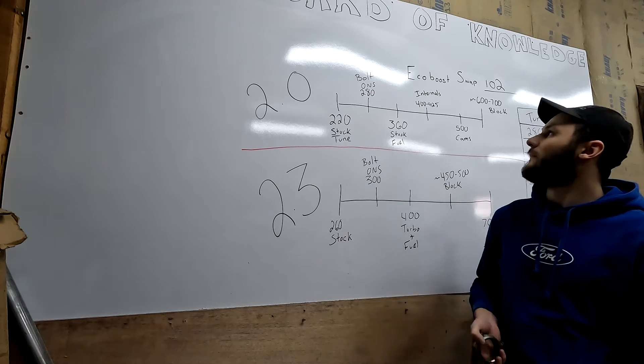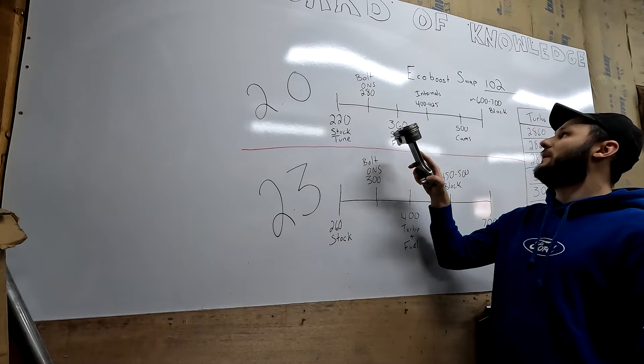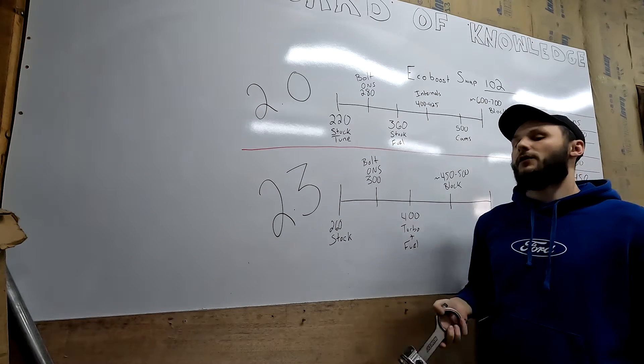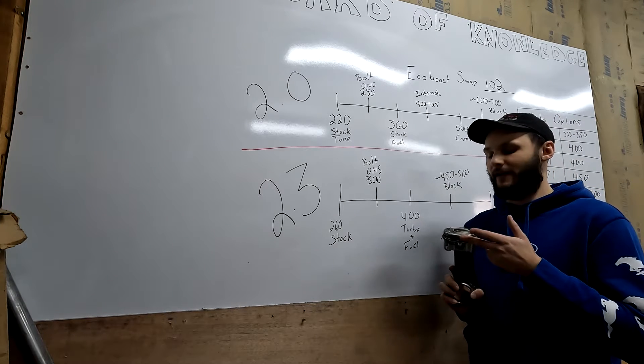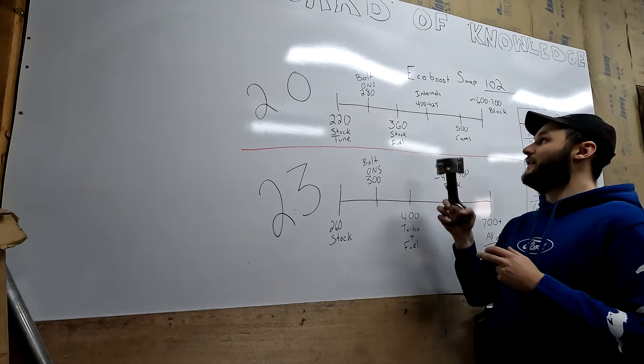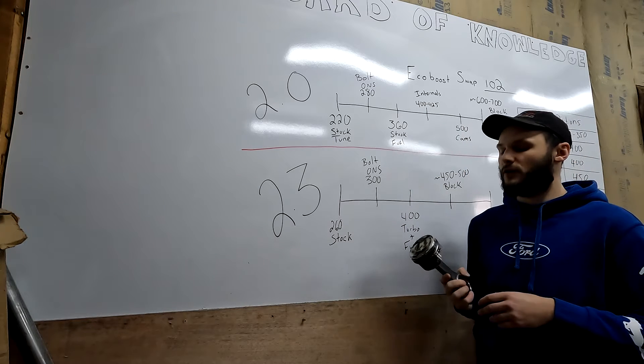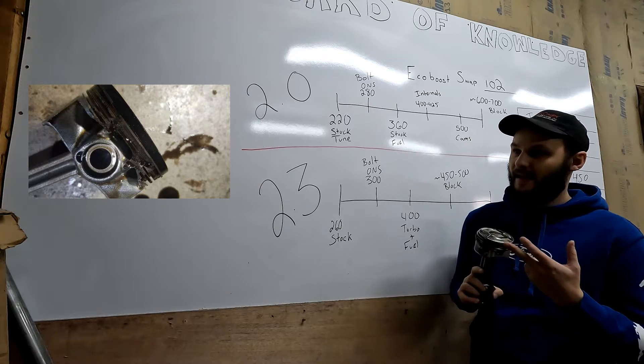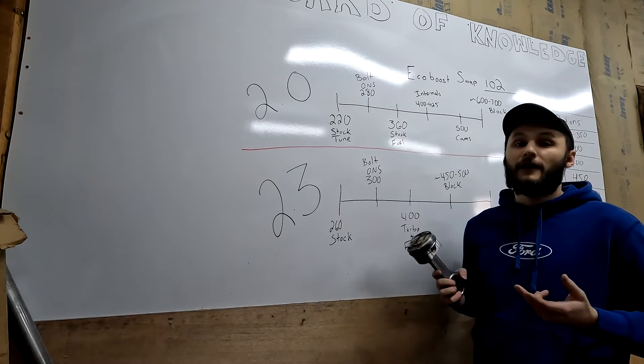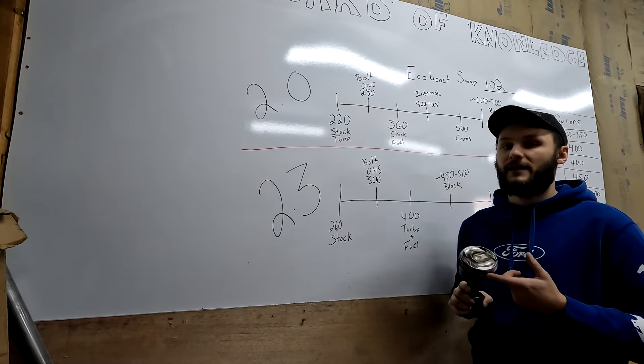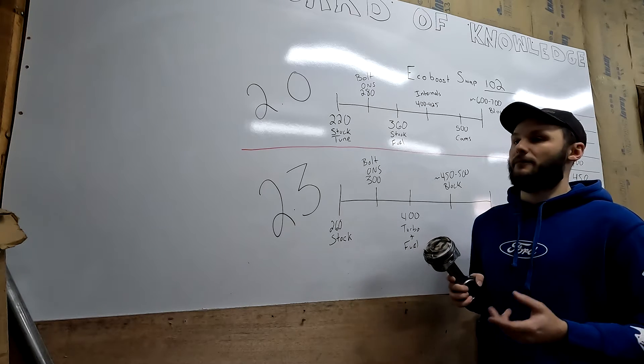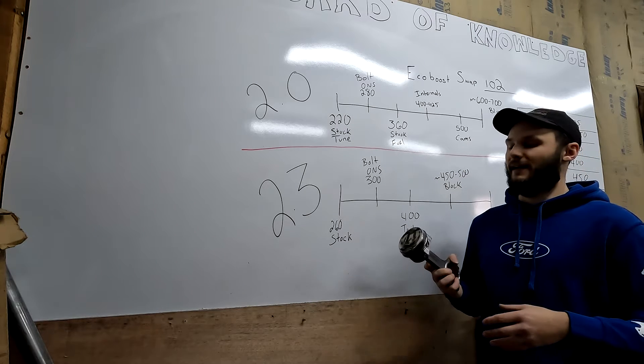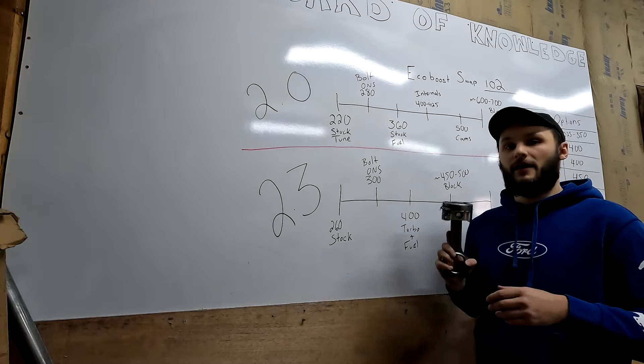After your stock fuel system limit, you'll hit the limit of the EcoBoost engine, all the internals, mostly the pistons and the ring lands. If you're pushing this kind of power, the 400 to 425 mark, you'll start to crack ring lands. This isn't a guarantee. I've seen people push up to above 500 horsepower on the stock pistons and be fine for a little bit, but the 400 to 425 mark is like the safe place to stop. After that, you should probably look at building your engine.